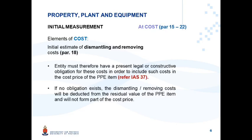In summary, the entity must have a present legal or constructive obligation for these costs in order to include such costs in the cost price of the PPE item. If no obligation exists, these costs will be deducted from the residual value of the PPE item, because they will be incurred at the end of the useful life with no previous obligation. You will deduct them from the proceeds of selling the asset at the end of its useful life for purposes of determining residual value.